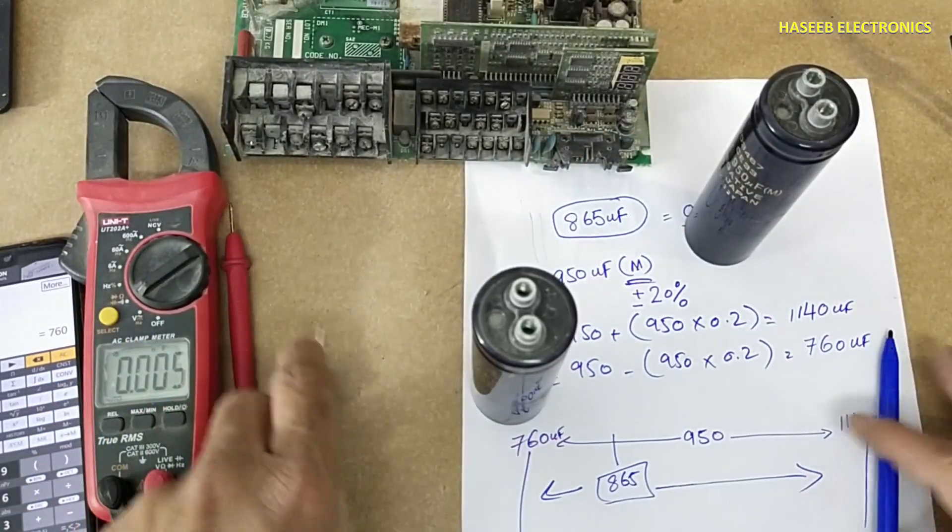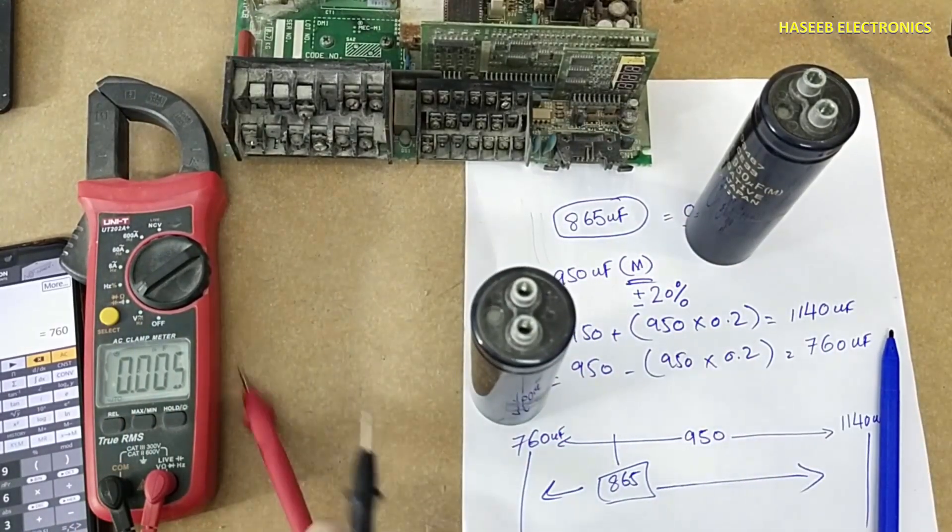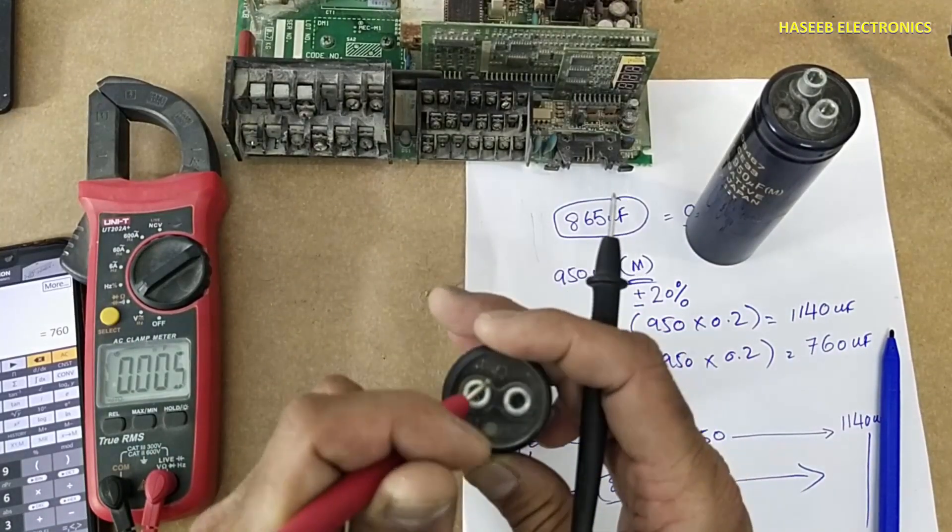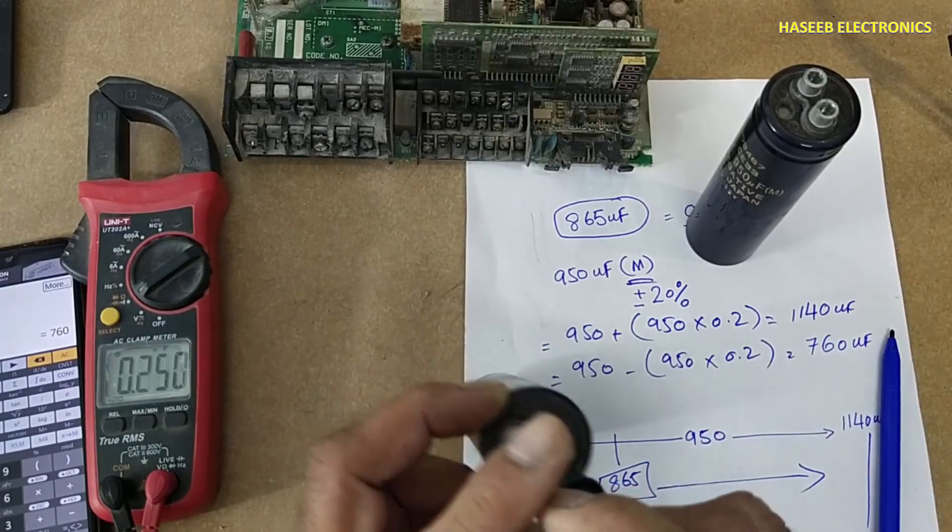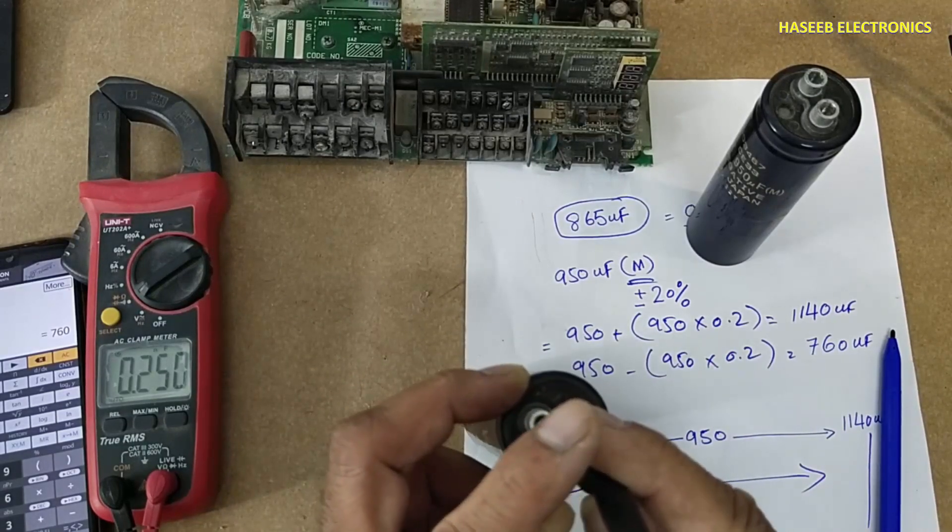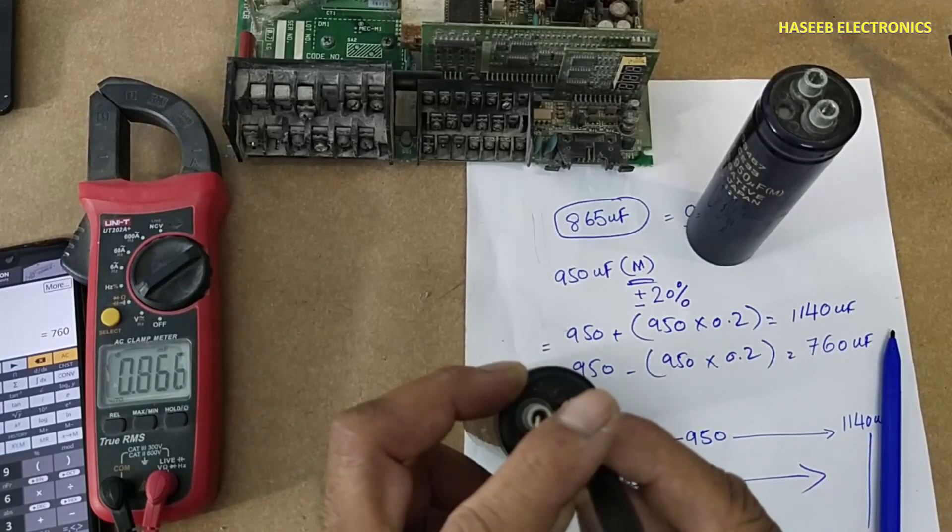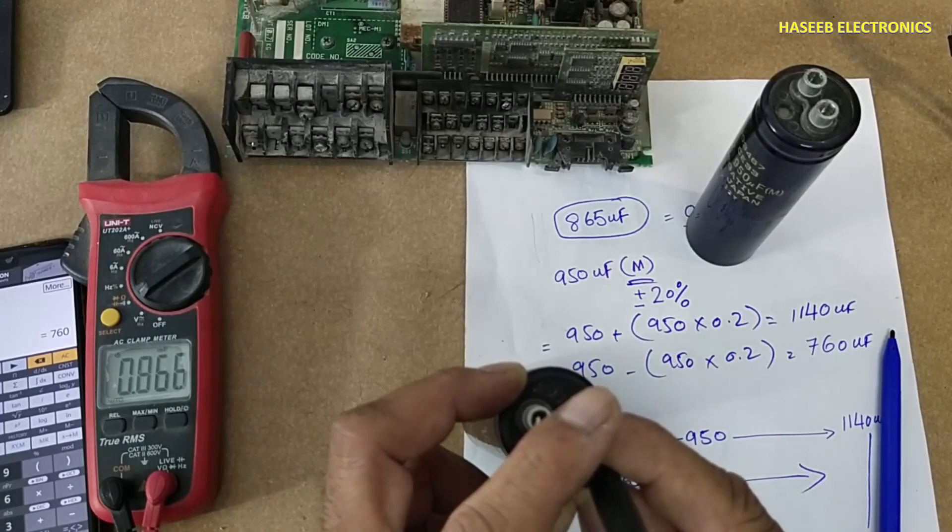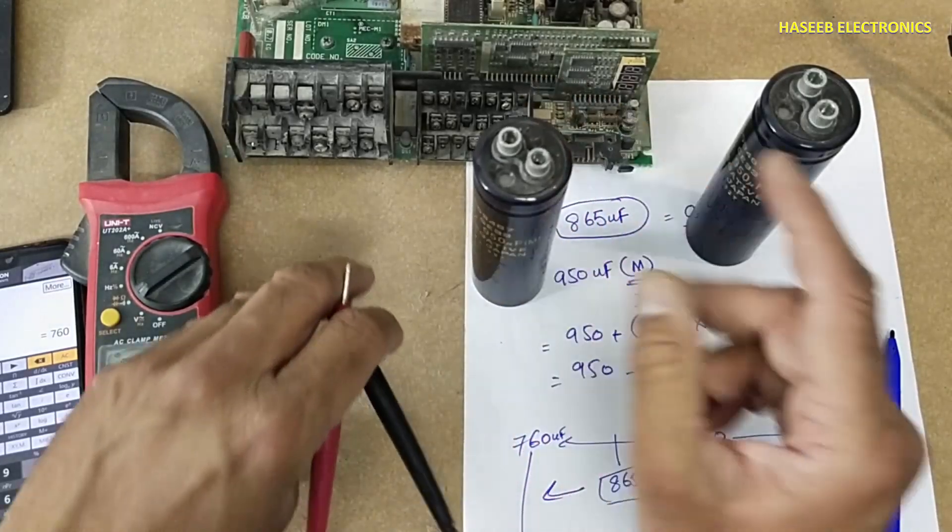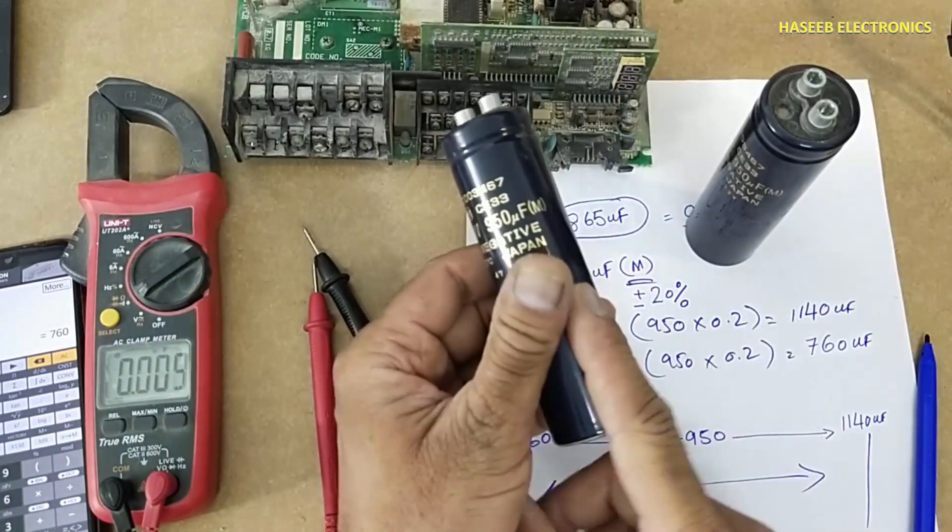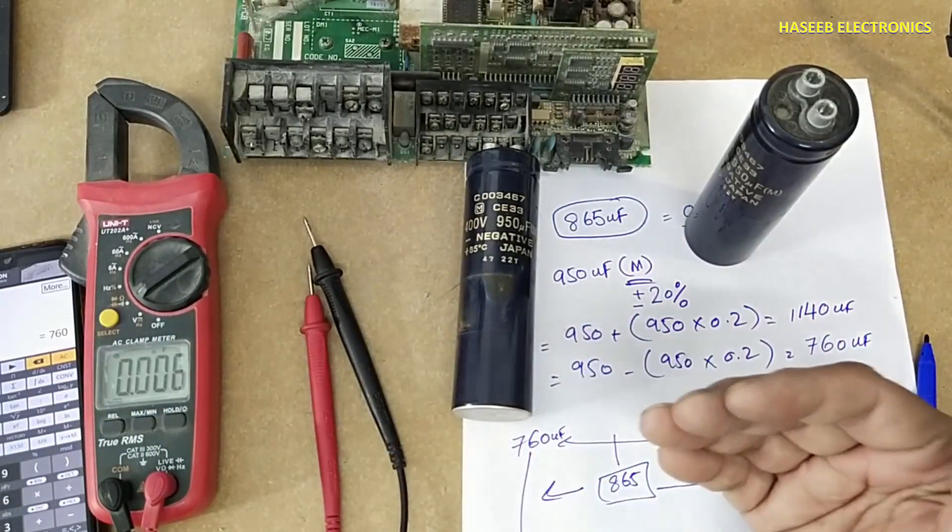If we check the second one - positive, red lead at positive terminal, black at negative. It is also the same, 866. This one 865 and this one 866. We can say both capacitors are good.